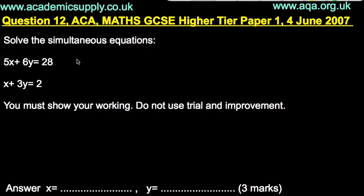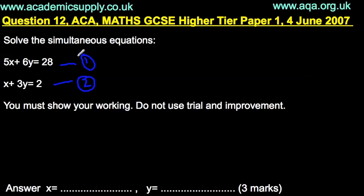So let's have a look at this question: 5x plus 6y equals 28, and x plus 3y equals 2. We'll call this equation 1 and this equation 2. In these simultaneous equations, all you want to do first is eliminate x or y, so you're left with just x's or just y's, and then you can solve to get the value of x and y.